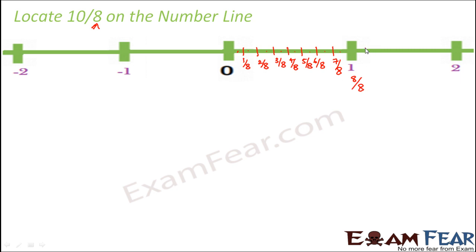Now if you continue on the same lines, what will you get? This would be 9 by 8, this is 10 by 8, 11 by 8, 12 by 8 and so on. So we had to locate 10 by 8. So this is where 10 by 8 would be located. So you see, this is the approach that we need to follow in order to locate any rational number on the number line.